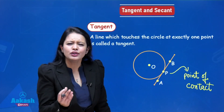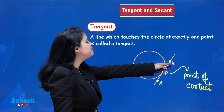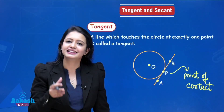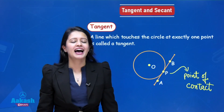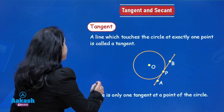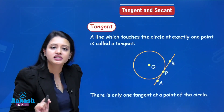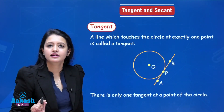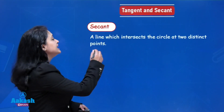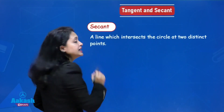How many tangents pass through this exact point P on the circle? The answer is exactly one — there is only one tangent at a point of the circle. Now let us see the definition of a secant. A secant is a line which intersects the circle at two distinct points.